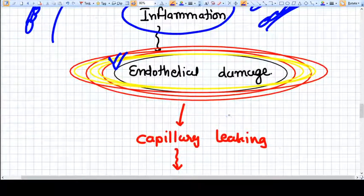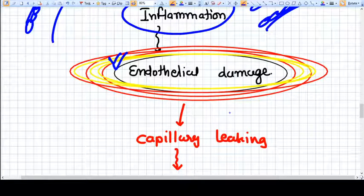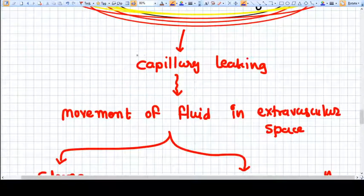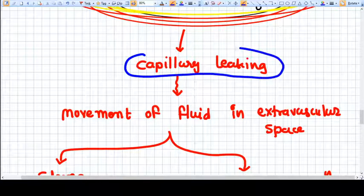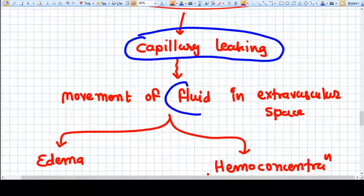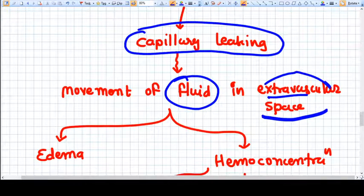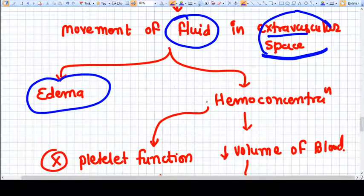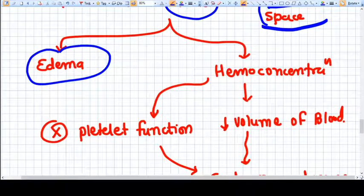So our circulatory system loses the volume of blood. It's called capillary leaking. Because of this capillary leaking, the fluid from the intravascular space goes to the extravascular space and that will lead to edema, which is very common in preeclampsia and gestational hypertension.